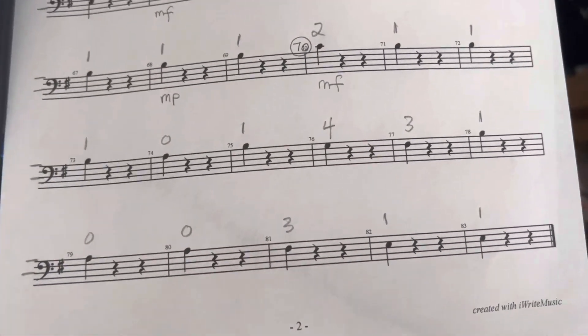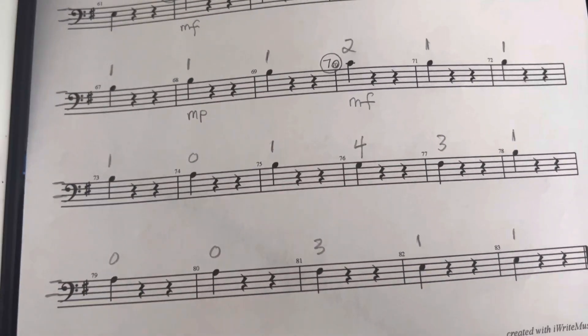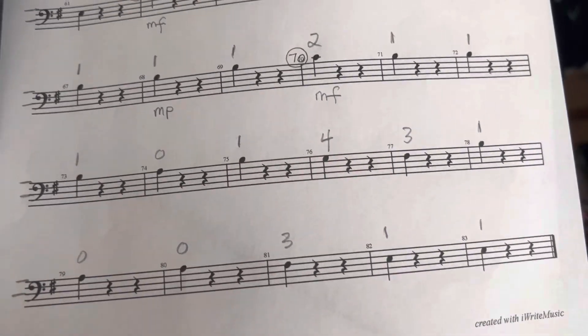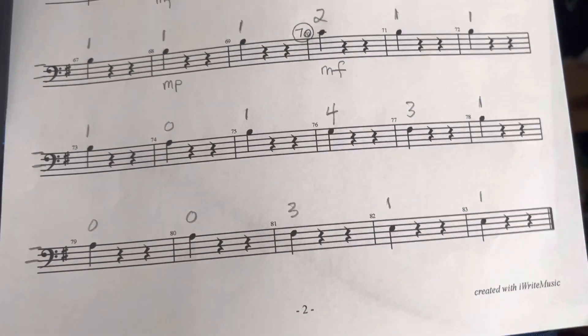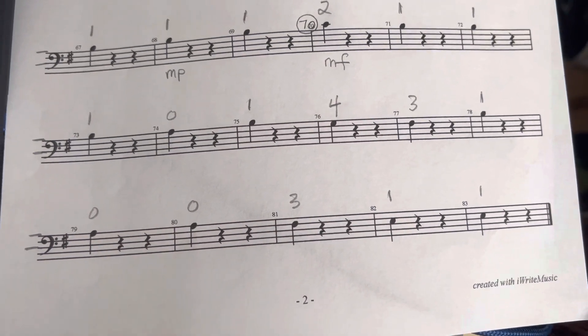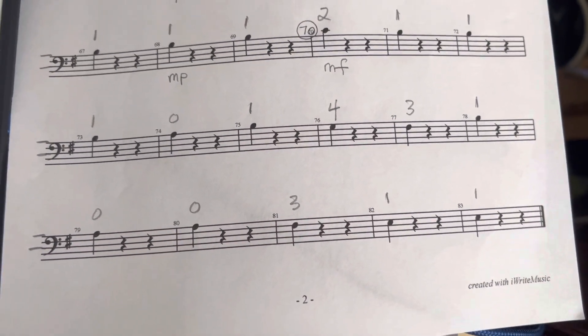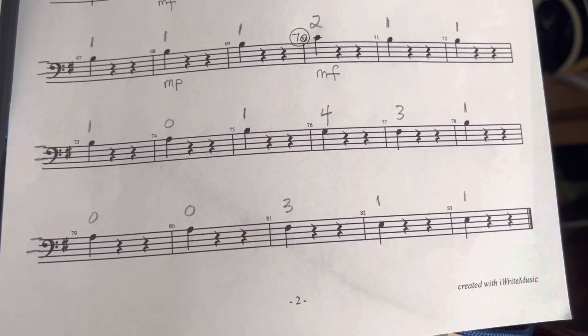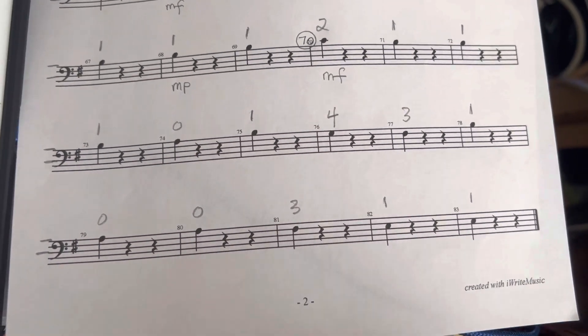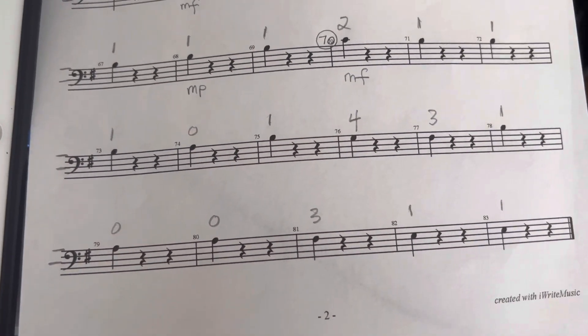So pretty much what I did is I just took the Tumbala Laika part and made it into a metronome. And frankly, there's so much stuff to work on. I think doing a little metronome part is just fine. So there you go. 3 on A.